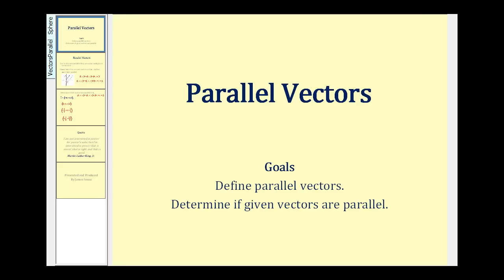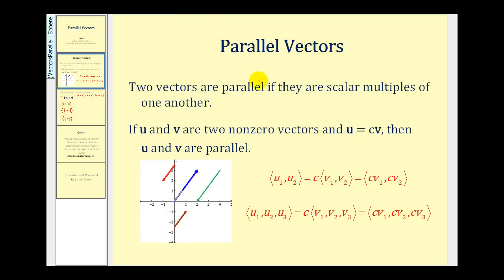Welcome to a lesson on parallel vectors. The goals of this video are to define parallel vectors and also to determine if given vectors are parallel. Two vectors are parallel if they are scalar multiples of one another. So we can say that if u and v are two non-zero vectors, then vector u must equal c times vector v, and if this is true, u and v are parallel. This is true in R2 and R3.